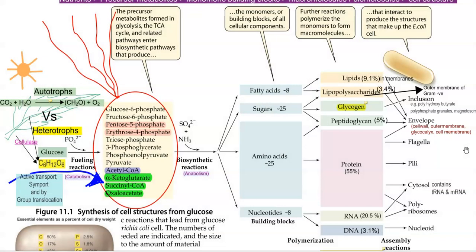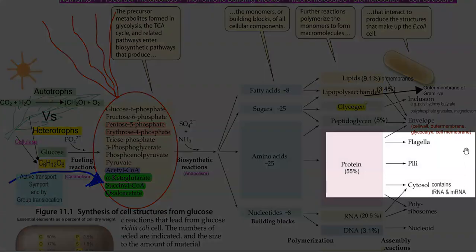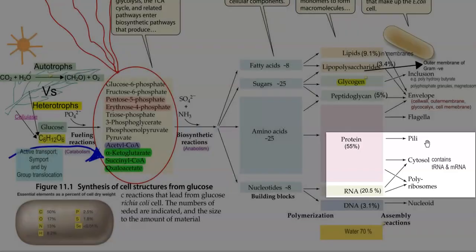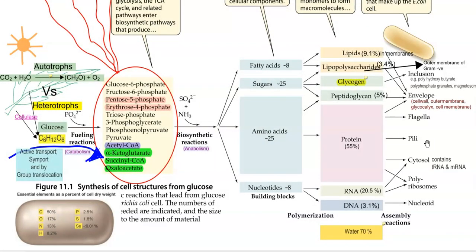Peptidoglycan is also found in the glycocalyx and in the cell wall. Proteins are associated with the formation of flagella, pili structures, and they can also be present in the cytoplasm along with tRNA and mRNA, commonly referred to as nucleoproteins. They can also be associated with the formation of ribosomes. Nucleic acids are required for the formation of the nucleus, which serves as a center for carrying hereditary information. Apart from that, DNA and RNA have a role during the cell's replication process and in the transcription and translation process.